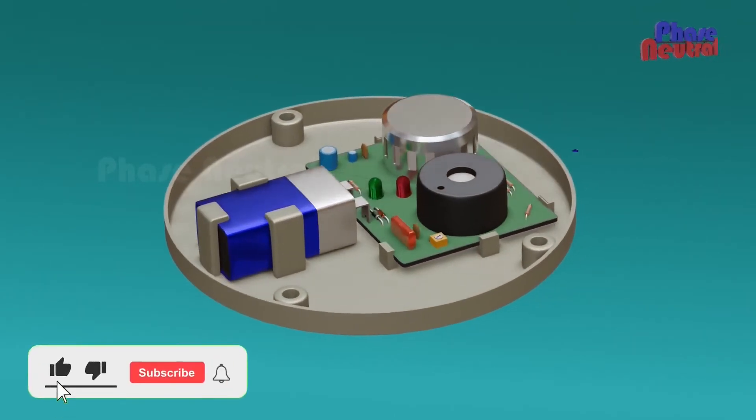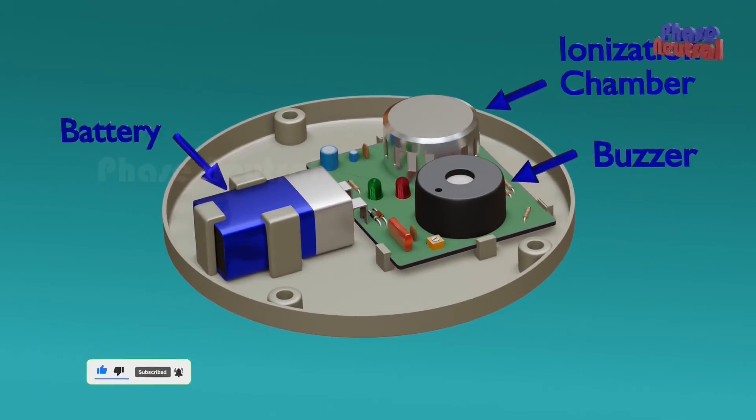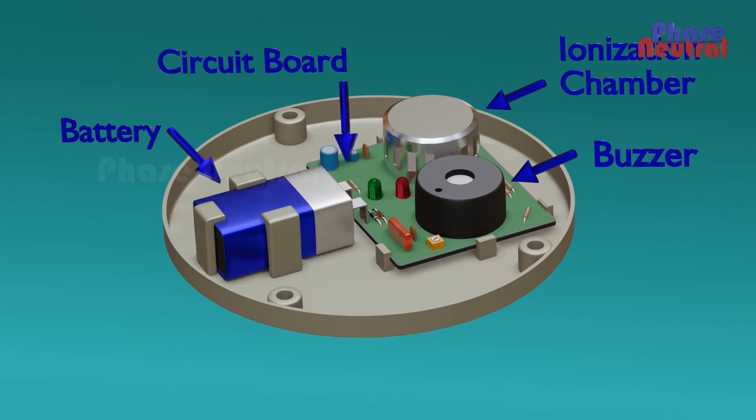Internal components of an ionization smoke detector are: ionization chamber, buzzer, battery, and circuit board.